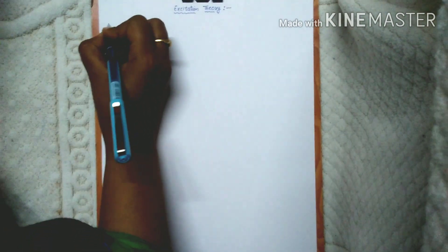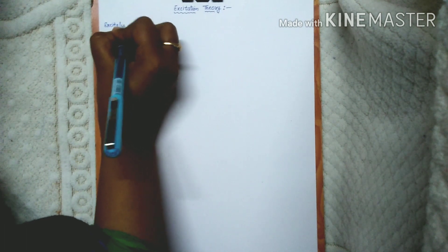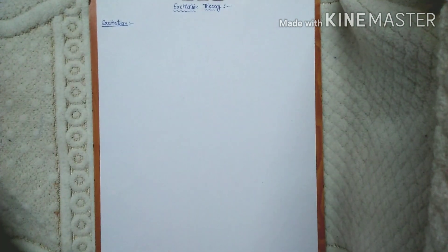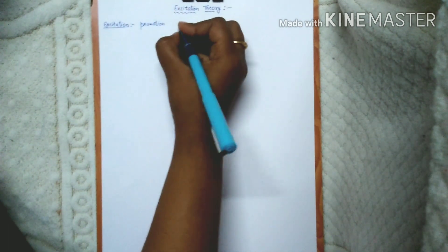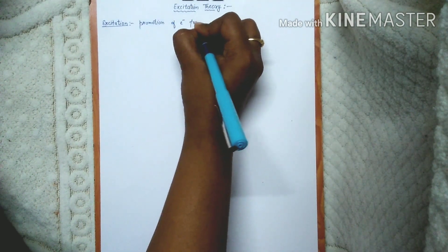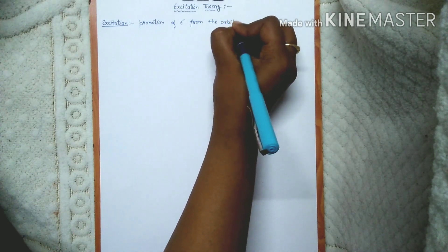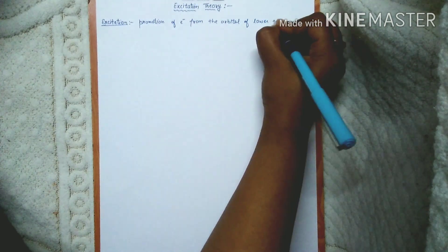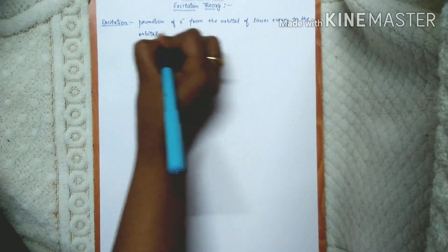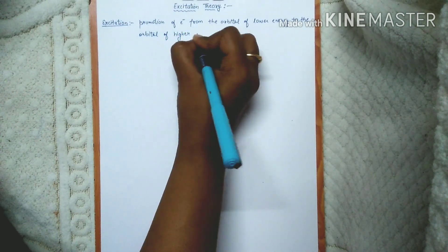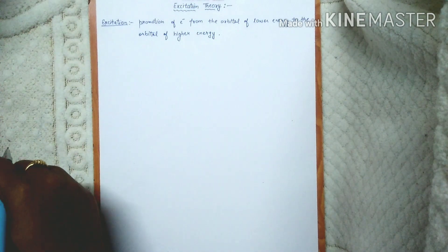Hi everyone, welcome to Netgate Chemistry. Today we are starting the topic excitation theory. First of all, what is excitation? Excitation means promotion of an electron from an orbital of lower energy to an orbital of higher energy. This is very basic - I think you'll be knowing that. So now we'll start: what is excitation theory?